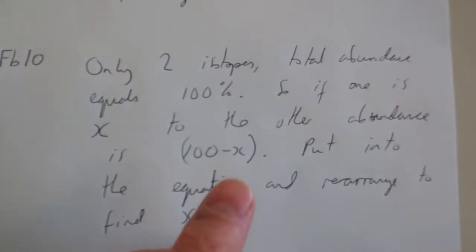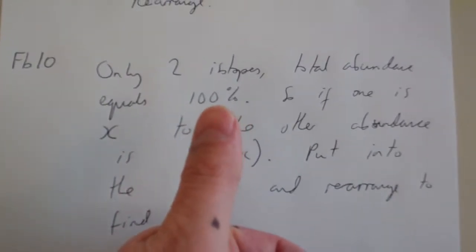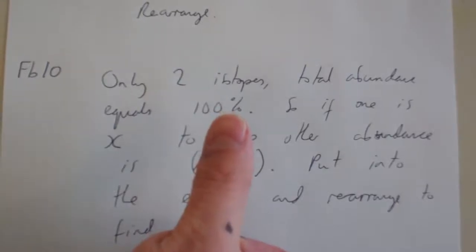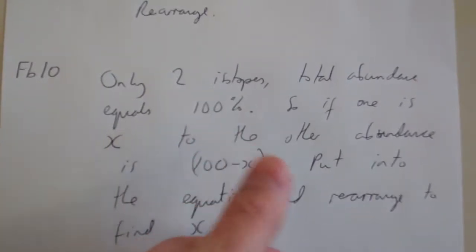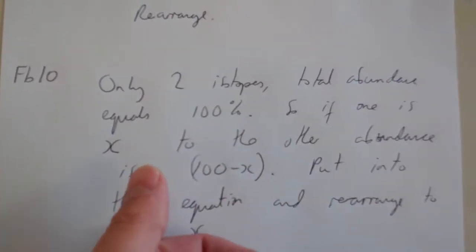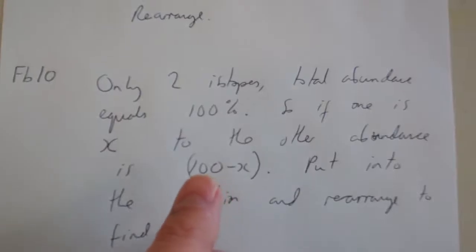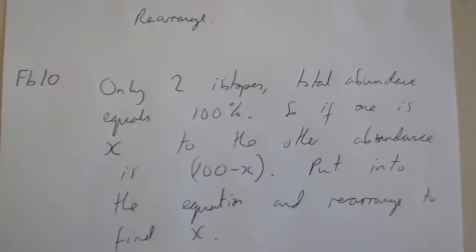Okay, feedback ten. So on number ten, there's only two isotopes, we know that, and their total abundance must be a hundred. So if one abundance is x, the other must be a hundred minus x, because they add up to a hundred.